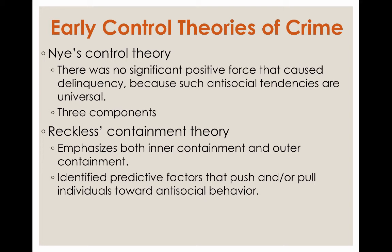Reckless's containment theory emphasizes both inner containment and outer containment, viewed as internal and external controls. Reckless identified predictive factors that push or pull individuals towards anti-social behavior. Individuals can be pushed into delinquency by their social environment — such as a lack of opportunities for education or employment — or by individual factors such as brain disorders or risk-taking personalities. They can also be pulled into criminal activity by hanging out with delinquent peers, watching too much violence on TV, or associating with negative influences. Containment theory proposes that extra pushes and pulls can motivate people to commit crime.